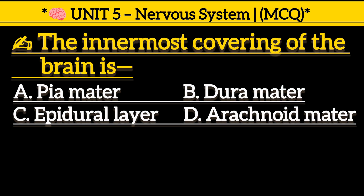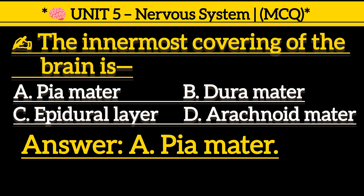The innermost covering of the brain is: Option A, pia mater. Option B, dura mater. Option C, epidural layer. Option D, arachnoid matter. Correct answer is Option A, pia mater.